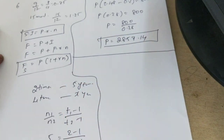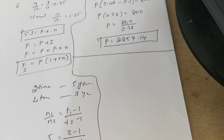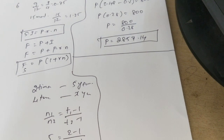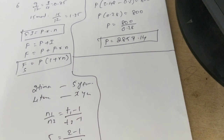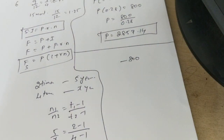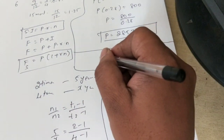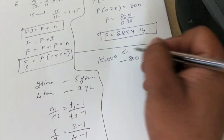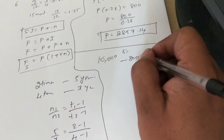In compound interest you earn interest on interest. For the first year, simple interest and compound interest are the same. But from the second year, complications start. For example, with ₹10,000 at 8%, the first year interest is ₹800. In the second year, you pay interest not just on ₹10,000 but on ₹10,800.